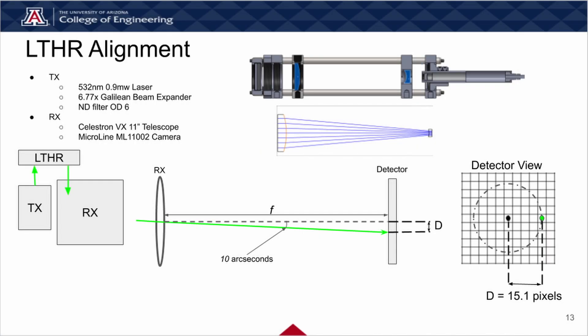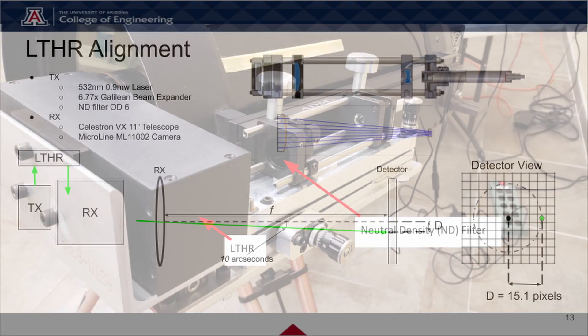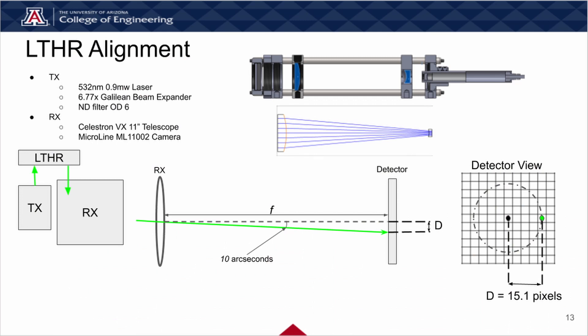For the TX unit, a 532 nanometer 0.9 milliwatt laser was used with a two-lens Galilean beam expander to create a minimally sized beam spot for testing distances of 200 to 1000 meters. An ND filter with an optical density of 6 was used when aligning the TX to the RX using the LTHR, so as to not over-saturate the detector. The LTHR retroreflects the TX beam into the RX and images the beam onto the detector. When the centroid of the beam is within 15.1 pixels of the center of the detector, the alignment process is complete.